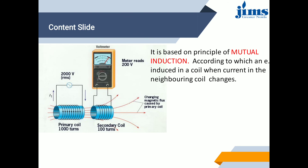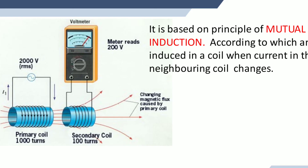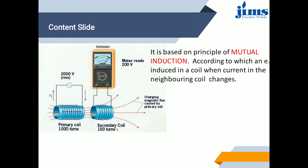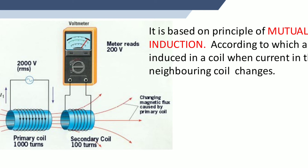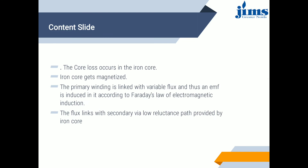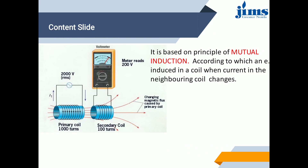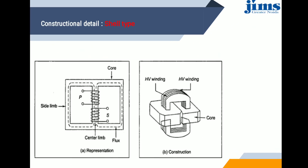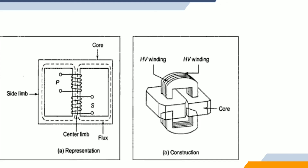A basic diagram showing the construction of a single phase transformer is based on the principle of mutual induction, according to which energy is induced in a coil when current in the neighboring coil changes. The primary coil consists of N1 turns and the secondary coil has N2 turns. It is a step-down transformer because N1 is greater than N2. This is the construction of a shell type transformer, which consists of a high voltage winding, core, counter limb, flux, and side limb.